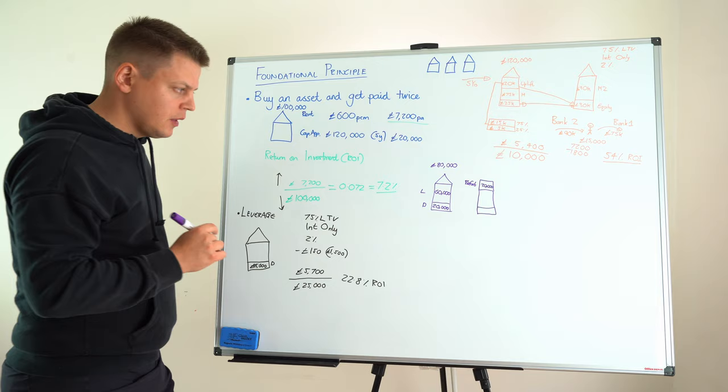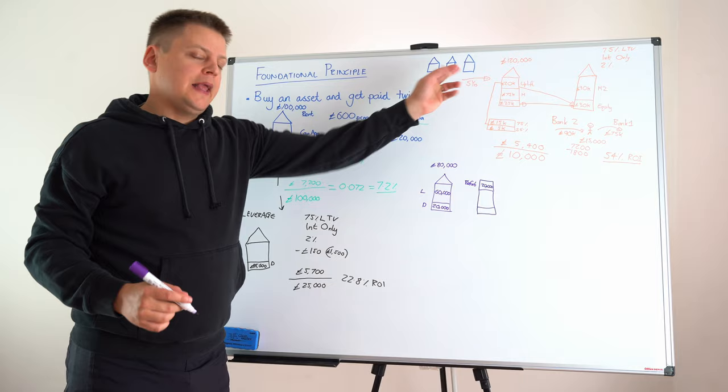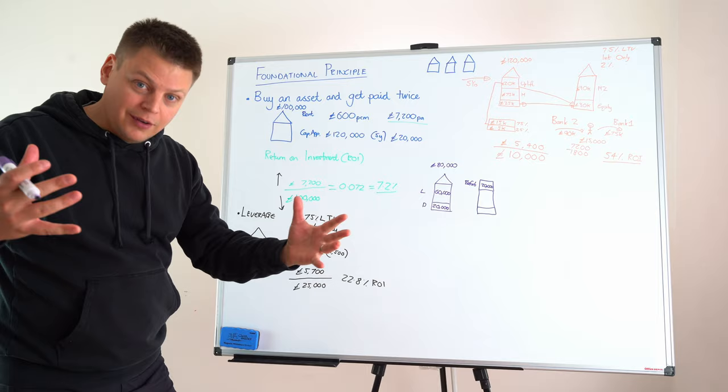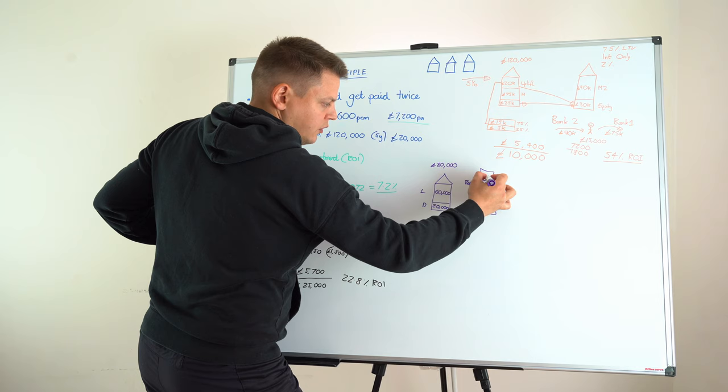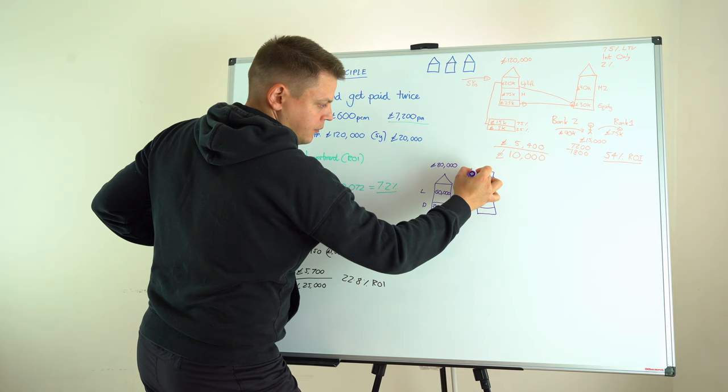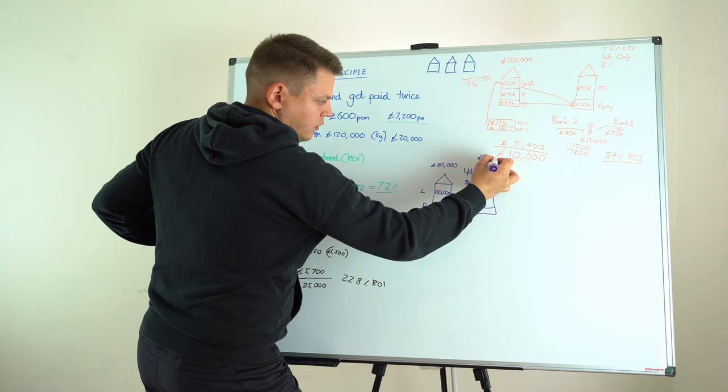But now with that refurb done, it's now going to be worth not eighty thousand pounds, not even the hundred thousand pounds—it's going to be worth a hundred and twenty thousand pounds because everything's done to it. So now you also have an uplift of twenty thousand pounds, meaning your house is now worth one hundred and twenty thousand pounds.